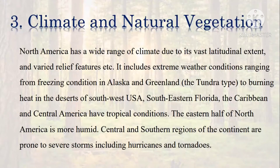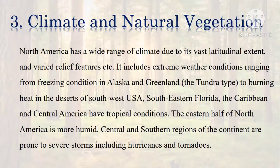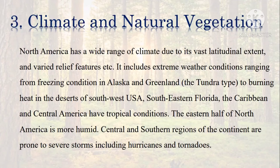North America has a wide range of climate due to its vast latitudinal extent and varied relief features. It includes extreme weather conditions ranging from freezing conditions in Alaska and Greenland to burning heat in the deserts of southwest USA and southeastern Florida. The Caribbean and Central America have tropical conditions. The eastern half of North America is more humid, and central and southern regions are prone to severe storms including hurricanes and tornadoes.